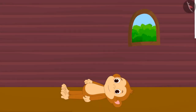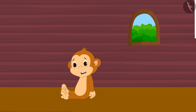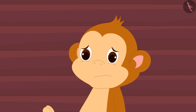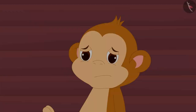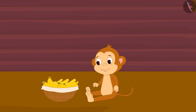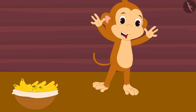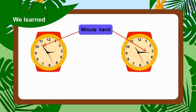When Babban woke up, he found himself in his house. Because Babban saw the time in the watch wrong, shortly after Babban went to sleep it was 2 o'clock and he returned to his house. Babban became depressed for a while. But then he saw that the angel had placed a lot of bananas in a basket beside him. Babban started dancing happily after seeing this. Children, in this video we learnt about some common mistakes related to telling time.